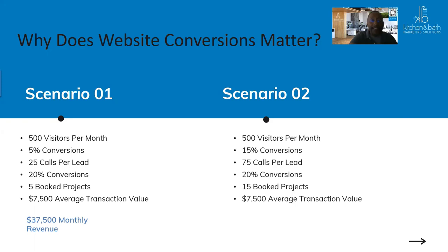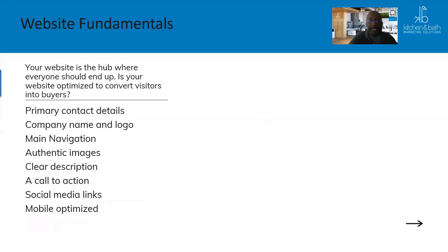Scenario two: the same 500 unique visitors per month, but with a 15% conversion rate — triple the previous rate — yielding 75 calls. At the same 20% closing rate, that's 15 booked projects. With the same $7,500 average transaction value, they're now making $112,500 in monthly revenue. You can see how just changing the conversion rate — without adding any SEO, social media, or PPC — dramatically increases sales.